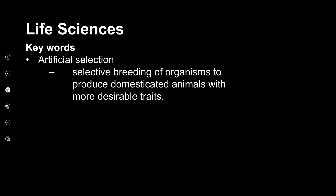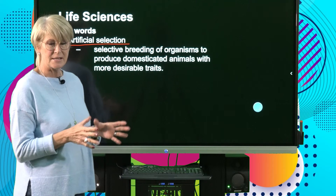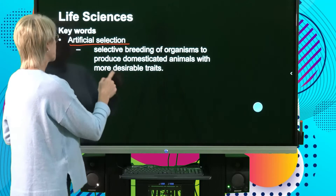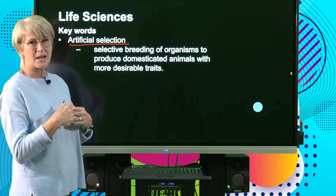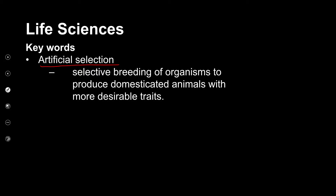Let's have a look at some of the key words. The first one is artificial selection. If we look at the terminology, artificial means that we artificially select something — in other words, it's not happening naturally. This is where humans selectively breed organisms to produce domesticated animals and even plants with more desirable traits.